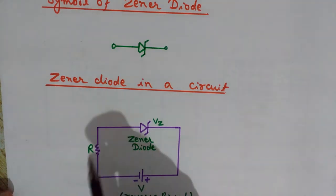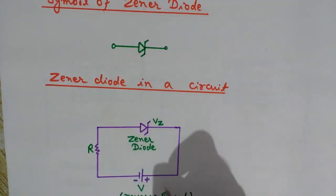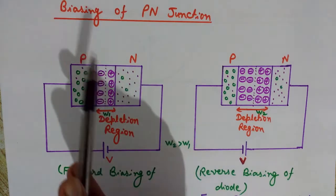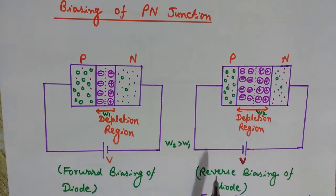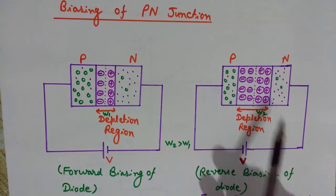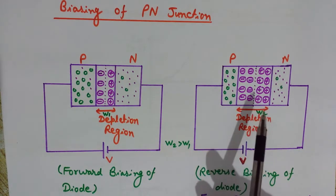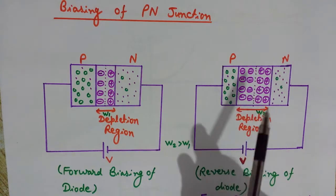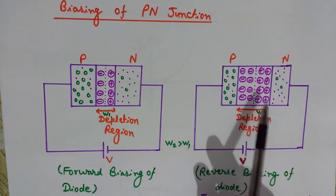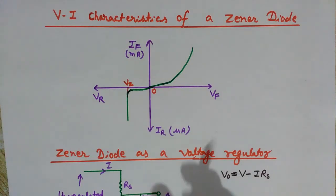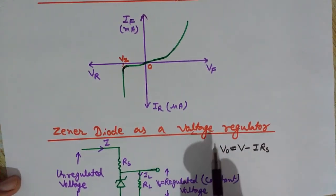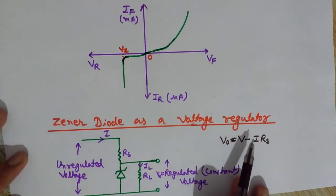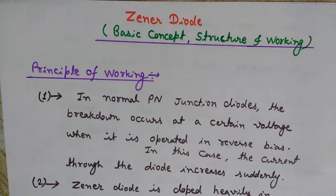We will discuss how the zener diode is used in reverse biasing in a circuit. We will also see the biasing of a PN junction — how forward biasing is done in a normal diode and how reverse biasing takes place in the zener diode, and how it affects the movement of electrons and holes. In the last part, we will see the VI characteristic of the zener diode and also the zener diode as a voltage regulator.